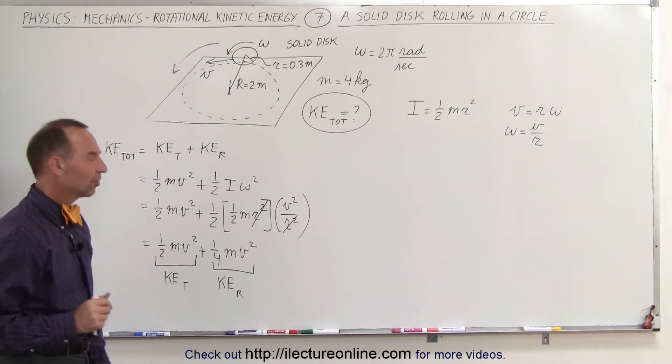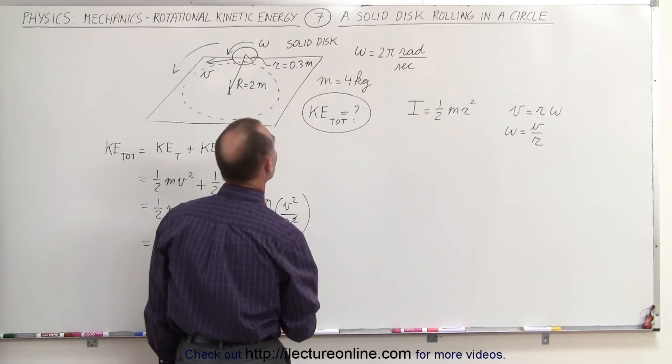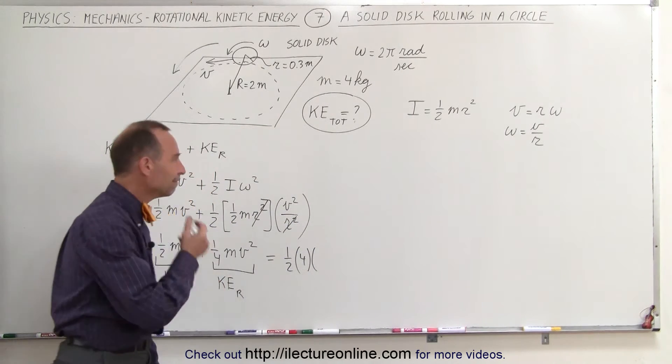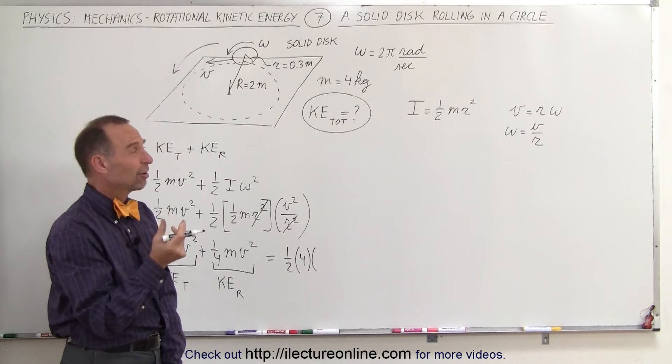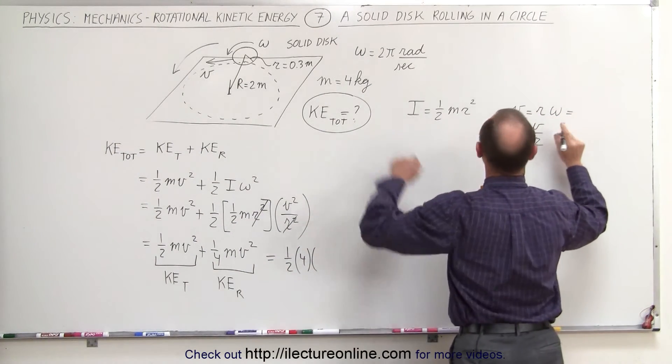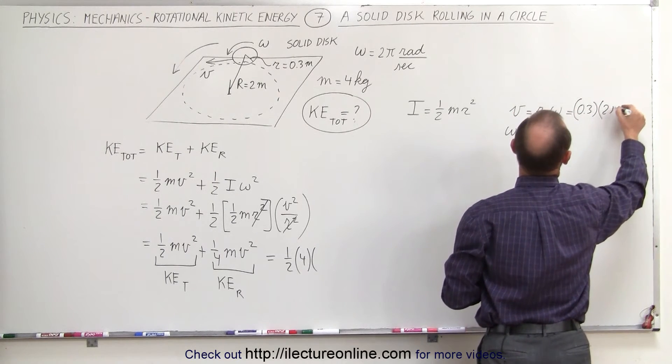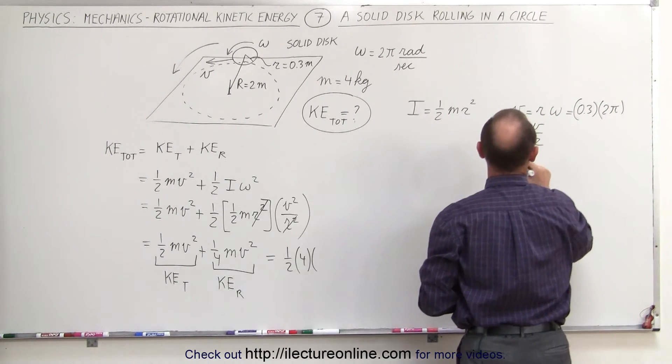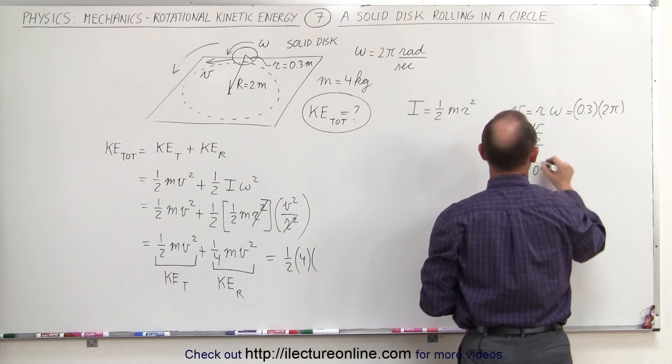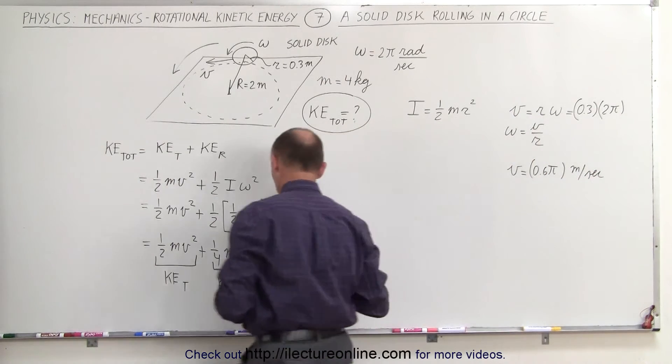Let's plug in the numbers and see what we get. Well, this is equal to 1/2 times the mass, which is 4 kg, times the translational velocity. But we don't have that translational velocity, we have to calculate it. This is equal to r, which is 0.3 meters, times omega, which is 2 pi, which means that the tangential velocity is 0.6 times pi, and of course it would be in meters per second. So that goes in here.